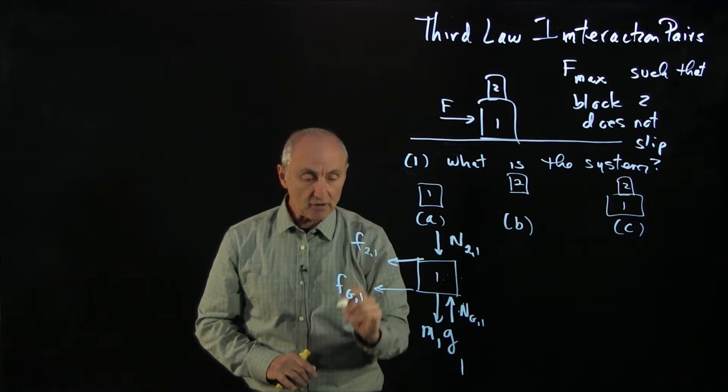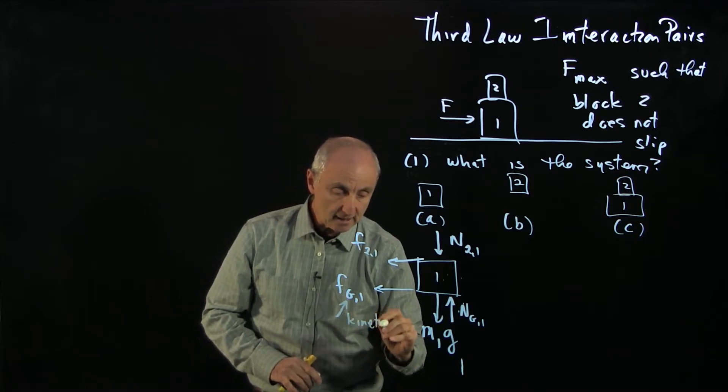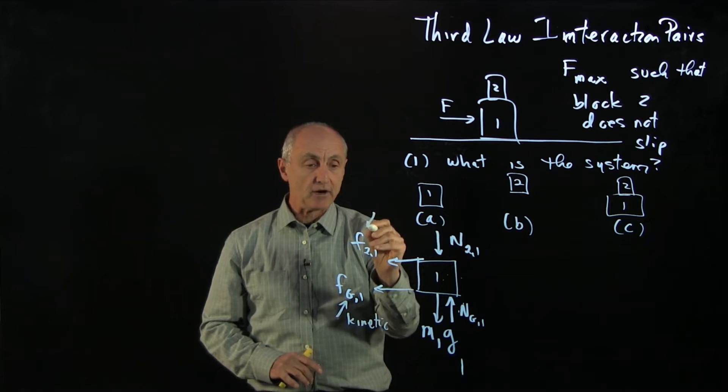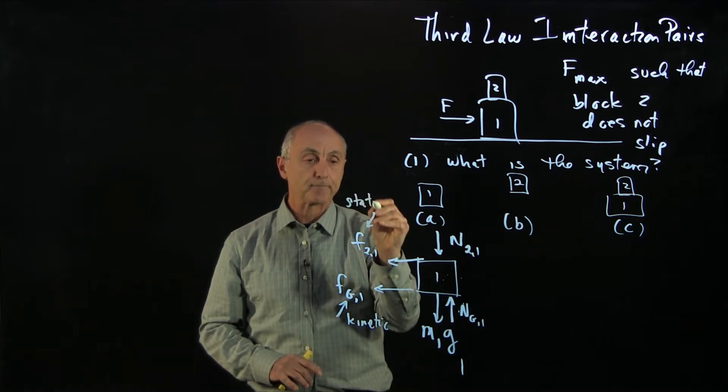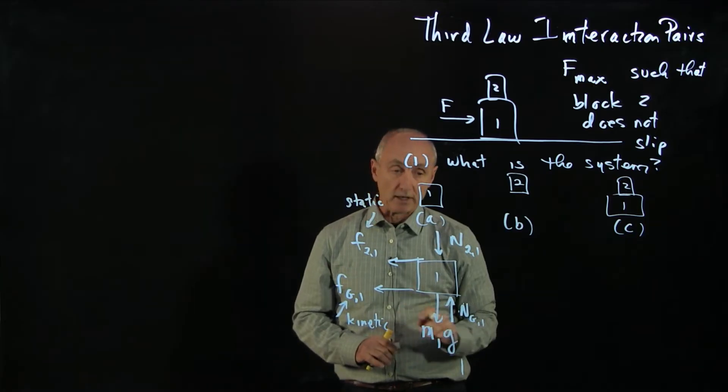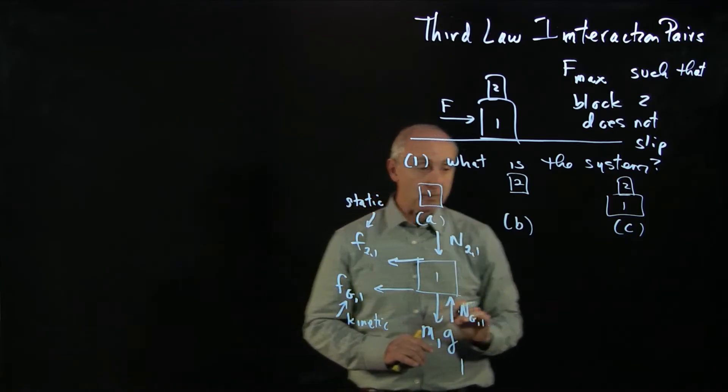Now, this friction down here is kinetic. But if the blocks are moving together, this friction here is static. So those are the free body force diagrams on one. I'll choose unit vectors in a moment. Now, what about two?